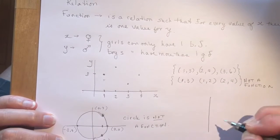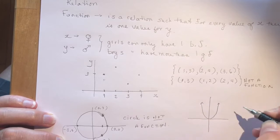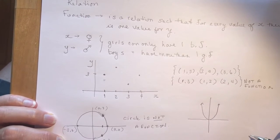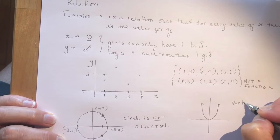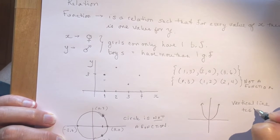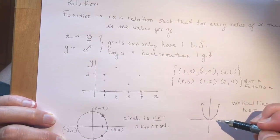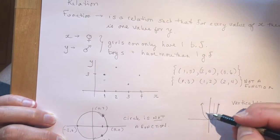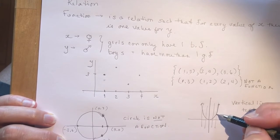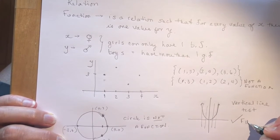Something else you did lots of in grade 10 was quadratics, so let's draw a parabola. The question is: is a parabola a function? There's something called the vertical line test — it says if you draw a vertical line anywhere on the relation and it only crosses the sketch at one spot, then it's a function. You can see if I draw a bunch of lines, they all only cross at one point, so a parabola is a function — every value for x has one value for y.